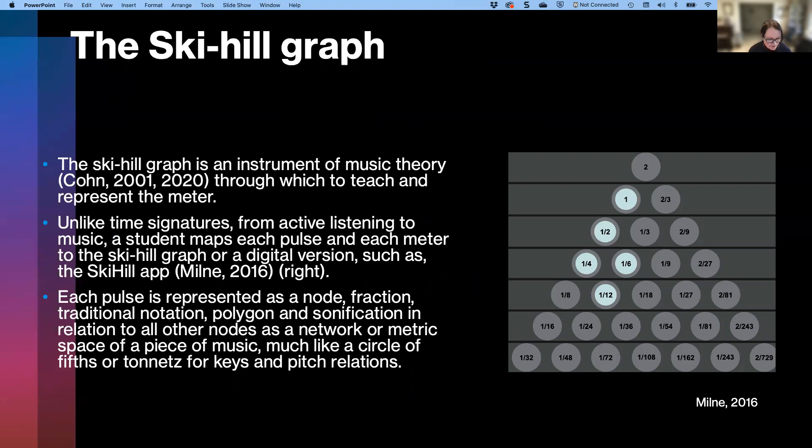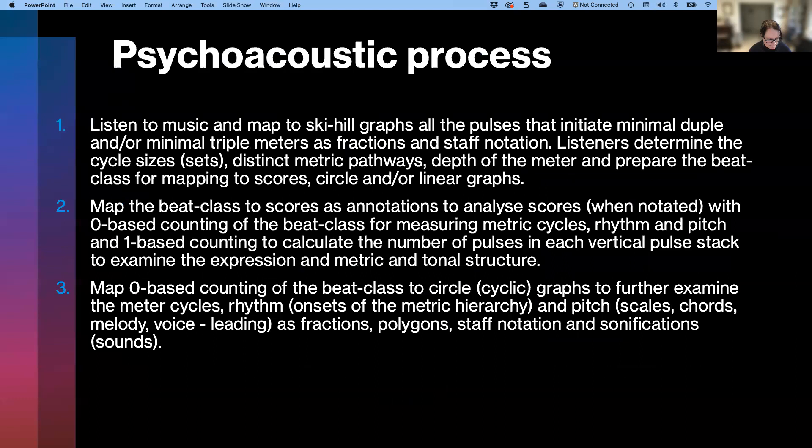Cohn's theories are a distillation of meter theory to solve the confusion which has developed about what meter is and how to teach the meter. Since 2015, I've been teaching students the meter through the ski hill graph, introduced around 2001 by Cohn to represent hemiolas. Through Cohn's theories, I have replaced notation-based understandings in my pedagogy of meter with a psychoacoustic process to train my students in mathematical music theory. My PhD topic, however, focuses on the first step in this flexible process: the pedagogy and notation of meter through the ski hill graph.